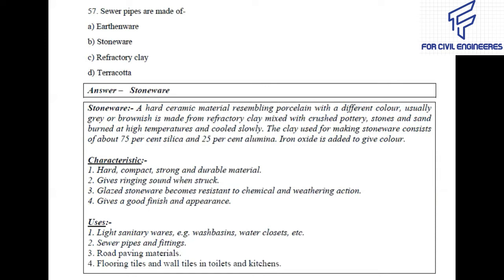What is stoneware? Stoneware is a hard ceramic material resembling porcelain with a different color, usually gray or brown. It is made from refractory clay mixed with grit and pottery, burned at high temperature and cooled slowly. The clay used for making stoneware consists of about 75% silica and 25% alumina. Iron oxide is added to give color. Characteristics: stoneware is hard, compact, strong, and durable. It gives a ringing sound when struck. Glazed stoneware is resistant to chemical and weathering action. Uses: light sanitary ware such as wash basins and water closets, sewer pipes and fittings, road paving materials, floor tiles and wall tiles in toilets and kitchens.